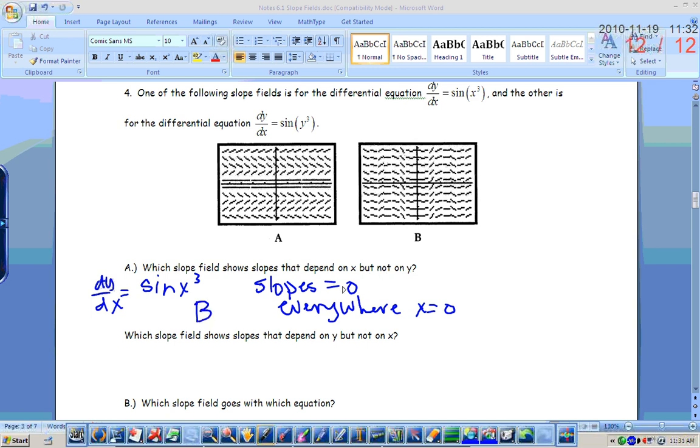So graph B shows slopes that depend upon x, but not on y. Anytime your slope field or your differential equation just has x's in it, you're going to have vertical stripes of your slopes. Because the slope is only dependent upon the x value, not the y value of every single point.